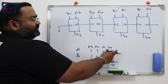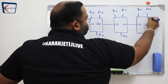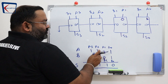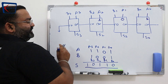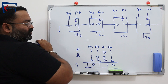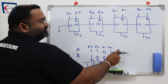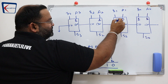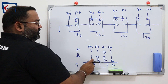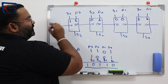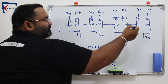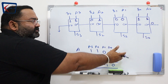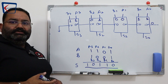A0 is 1, A1 is 0, A2 is 1, A3 is 1. Similarly B0 is 1, B1 is 0, B2 is 0, B3 is 1. The first carry-in we will assume is 0, because there is nothing before the first bit, so obviously the carry-in is 0.